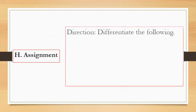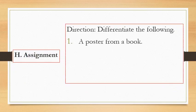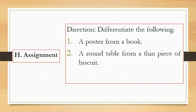For the assignment. They're going to differentiate the following. For number one, a poster from a book. They're going to differentiate it now between a poster and a book. Also, they're going to differentiate a round table from a thin piece of biscuit. Also, they're going to differentiate a curtain from a chalkboard.